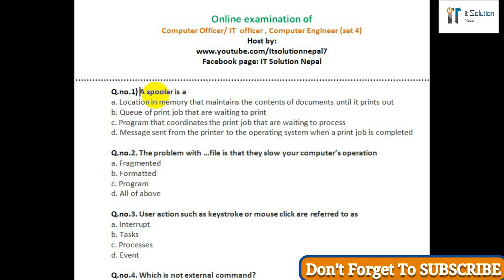Question number one: A spooler is — option A: a location in memory that maintains the contents of a document until it prints out; option B: a queue of print jobs that are waiting to print; option C: a program that coordinates the print jobs that are waiting to print; option D: a message sent from the printer to the operating system when a print job is complete.